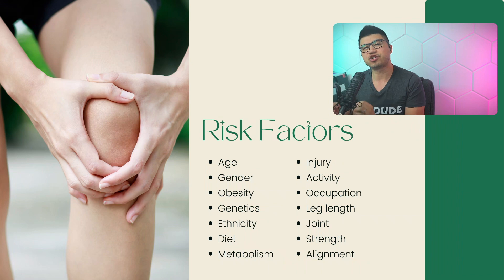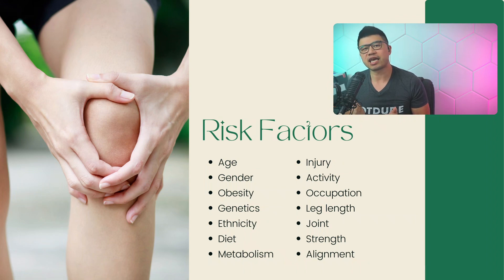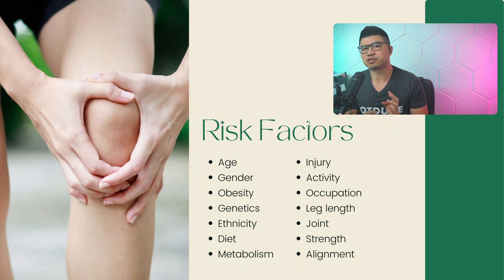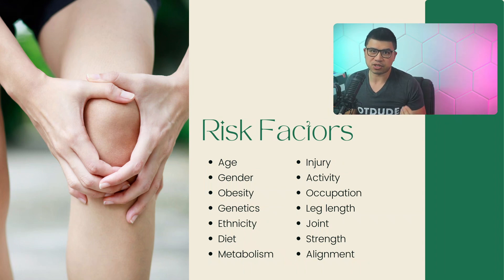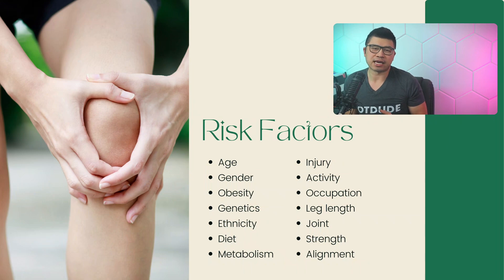There are many potential risk factors for increased susceptibility to OA. For the individual, factors include age, sex, obesity, genetics, ethnicity, diet, and bone metabolism. More specifically, older adults being female and more obese with increased BMI are key risk factors. Risk factors that make the joint more susceptible include injury, activity, occupation, leg length discrepancy, the joint itself, strength, and alignment.